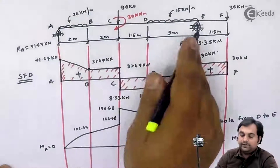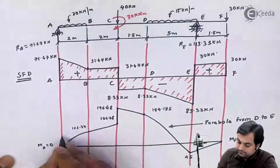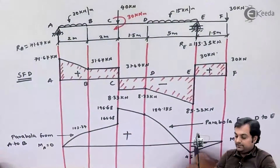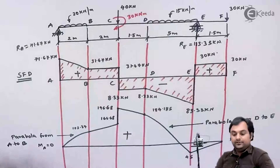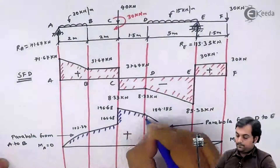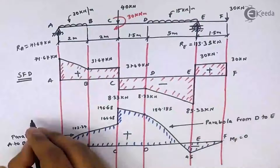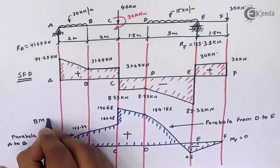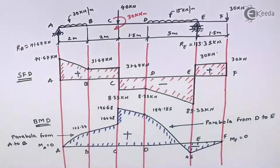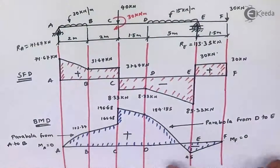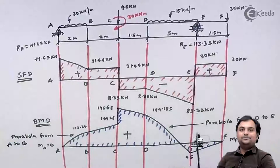To summarize: the parabolic curves are from A to B and from D to E. The positive and negative regions of the bending moment diagram are marked accordingly. With this, we have completed the bending moment diagram and the full shear force and bending moment diagram problem.